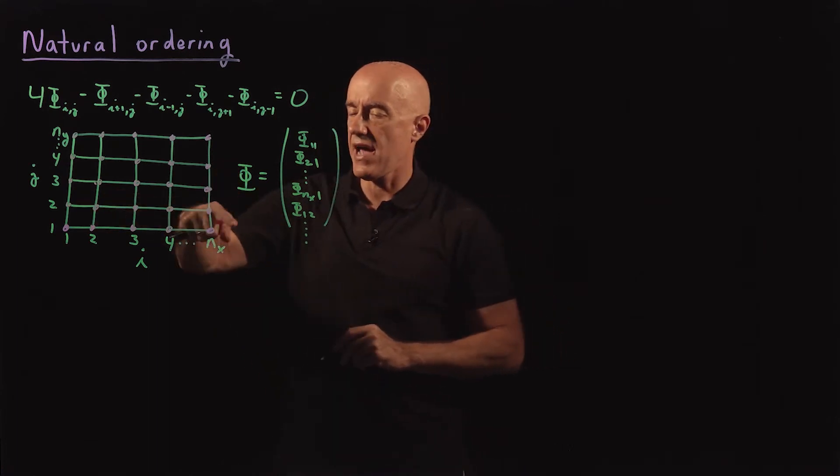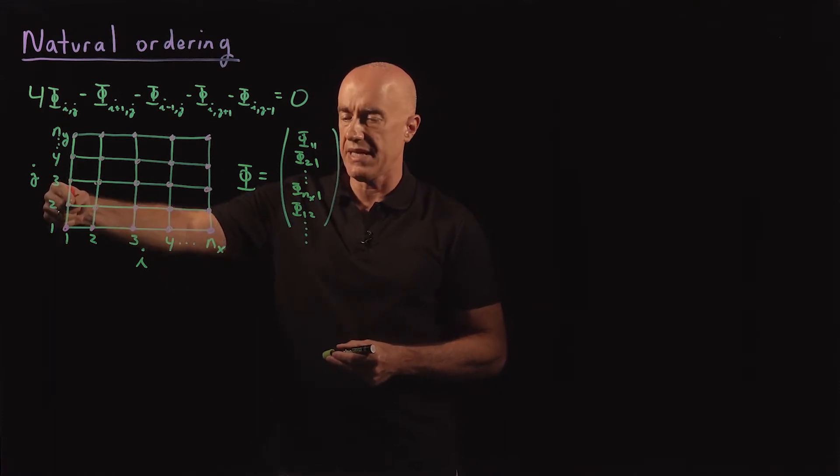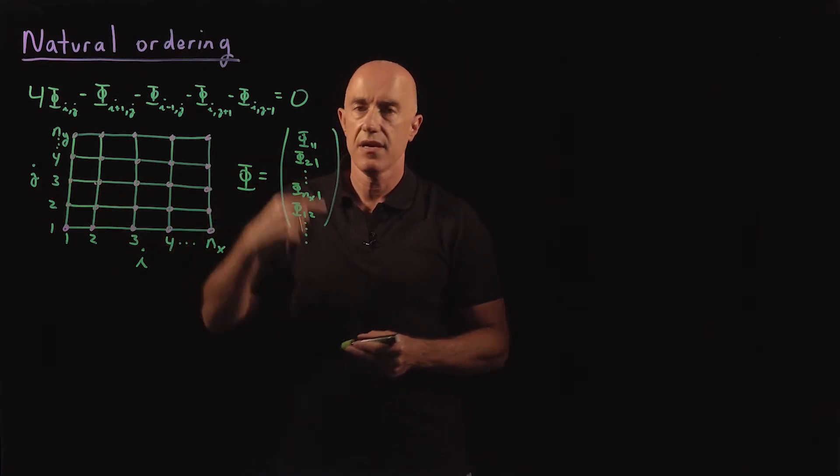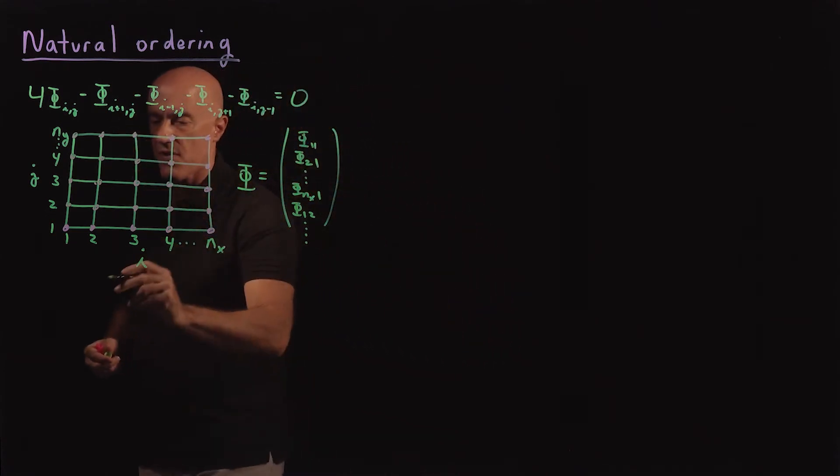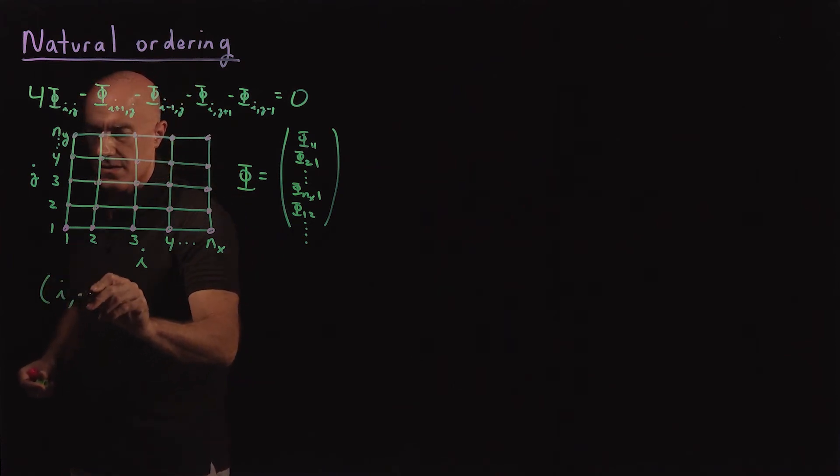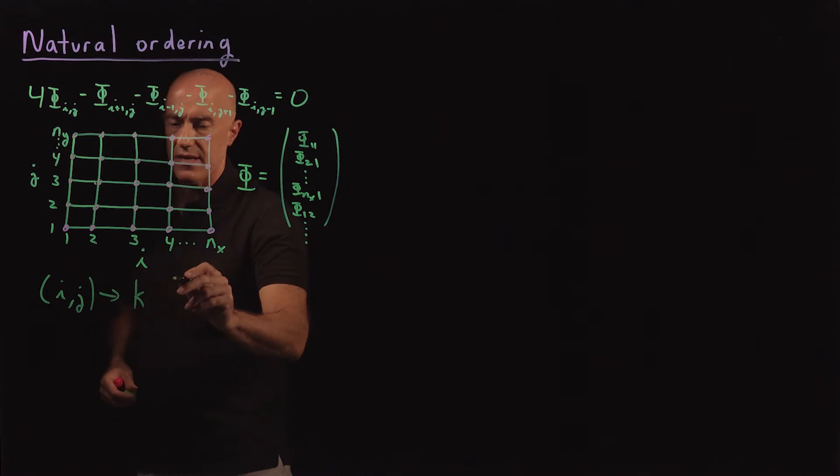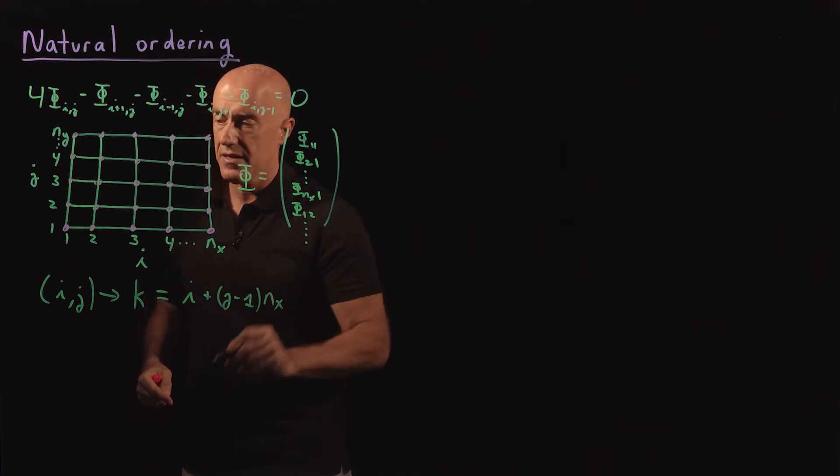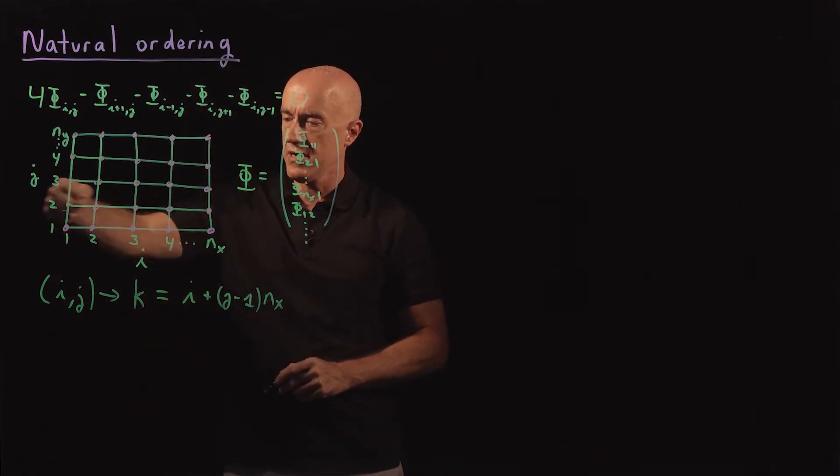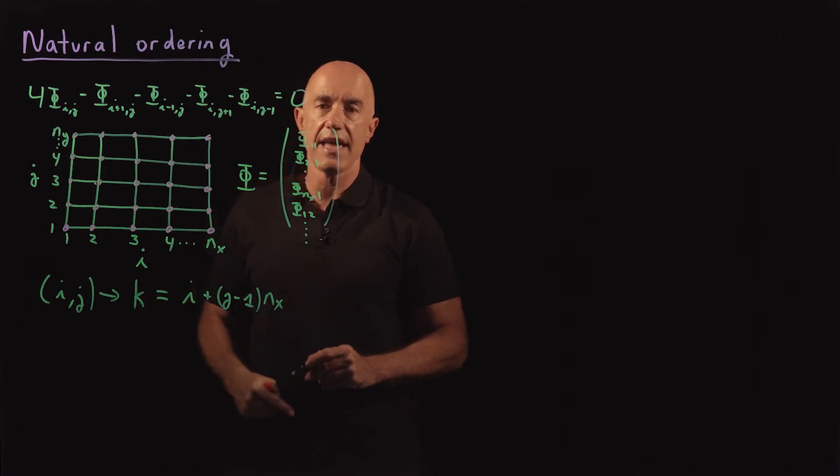And then we go to the second row here, starting from the bottom going up. So the second one here will be phi of 1, 2, and then keep going. So we're ordering phi in a column vector, going across the x direction, and then going back to the beginning, and then going across the x direction again. So we need to convert this i, j coordinate to a single coordinate, k. And what is the relationship, then? k is going to be i, where you are in the x direction, plus j minus 1 times nx. So if you're in the second row here, j will be 2, and then to i you add nx, because you've already gone through nx values of i.